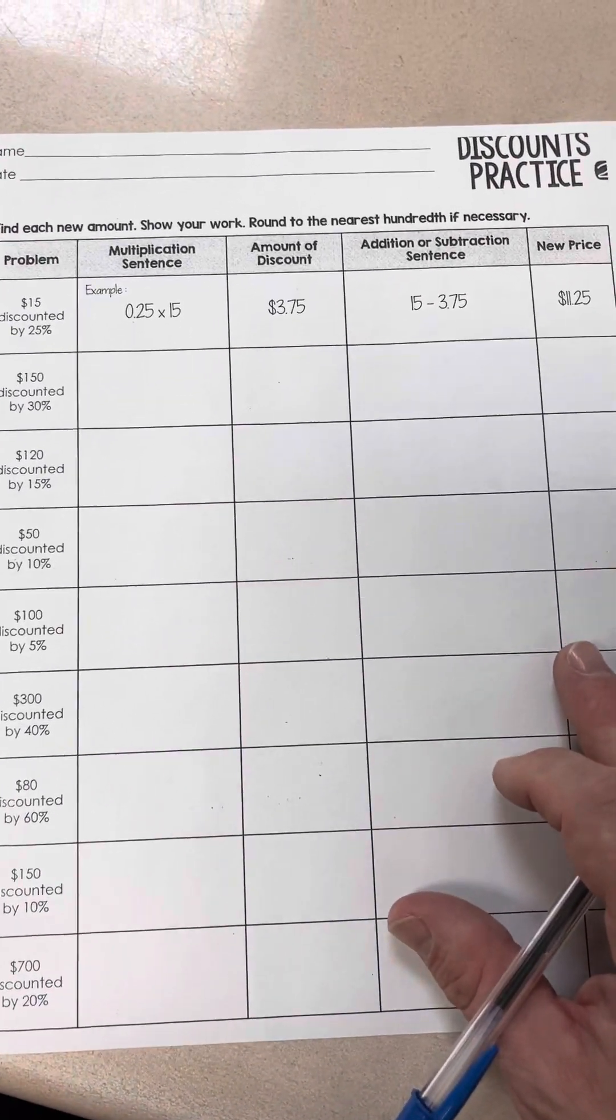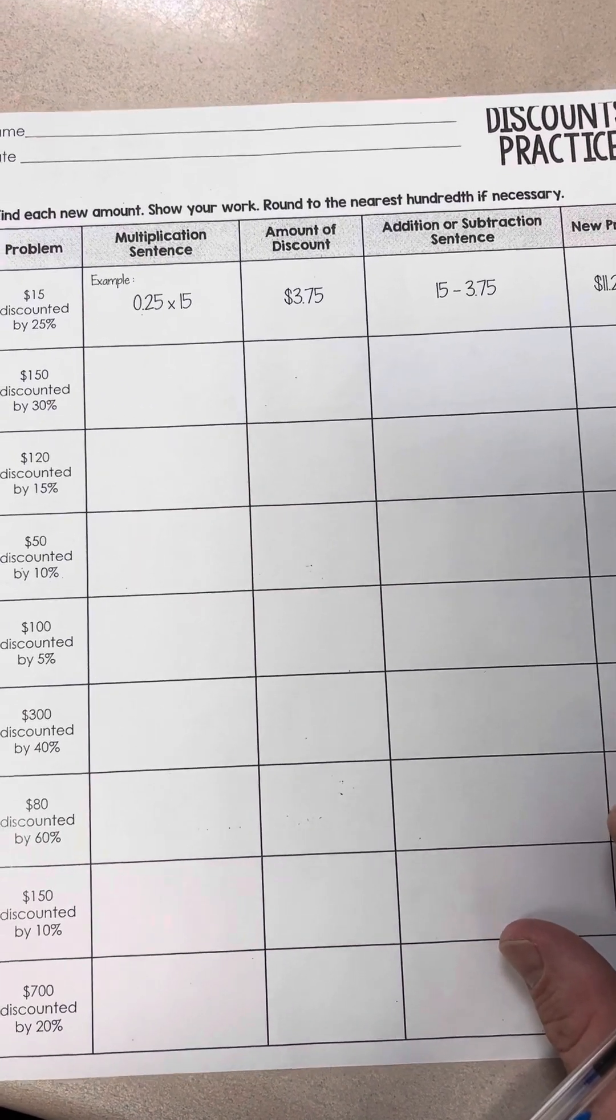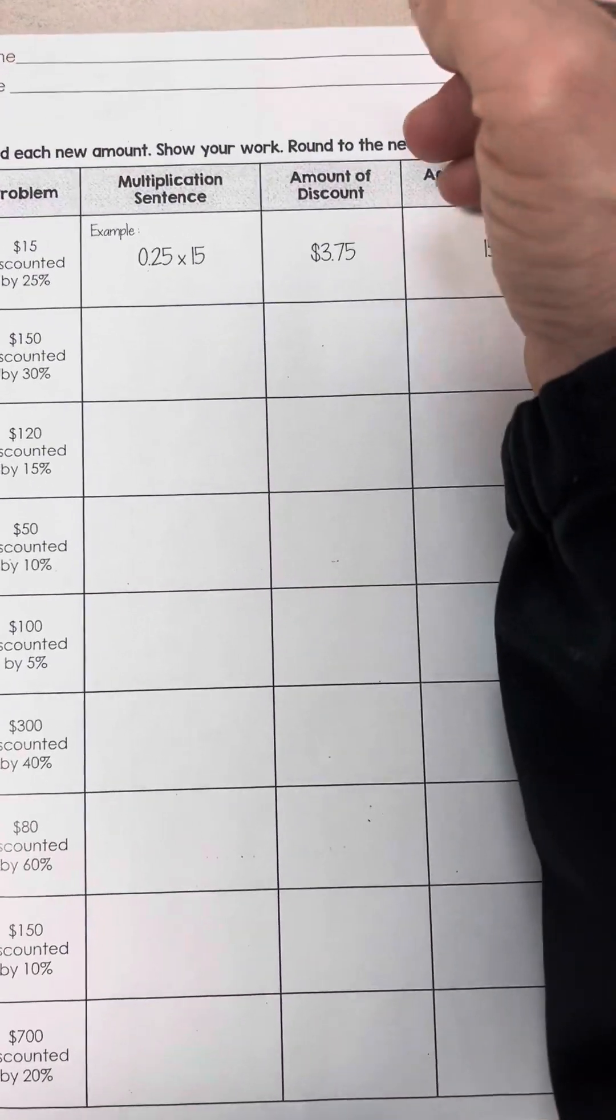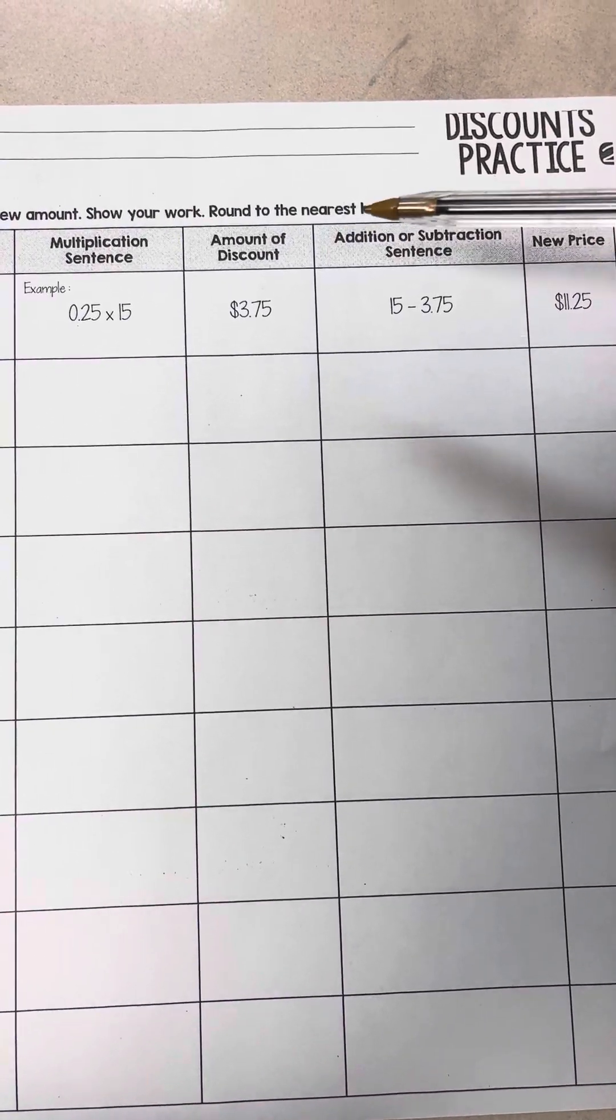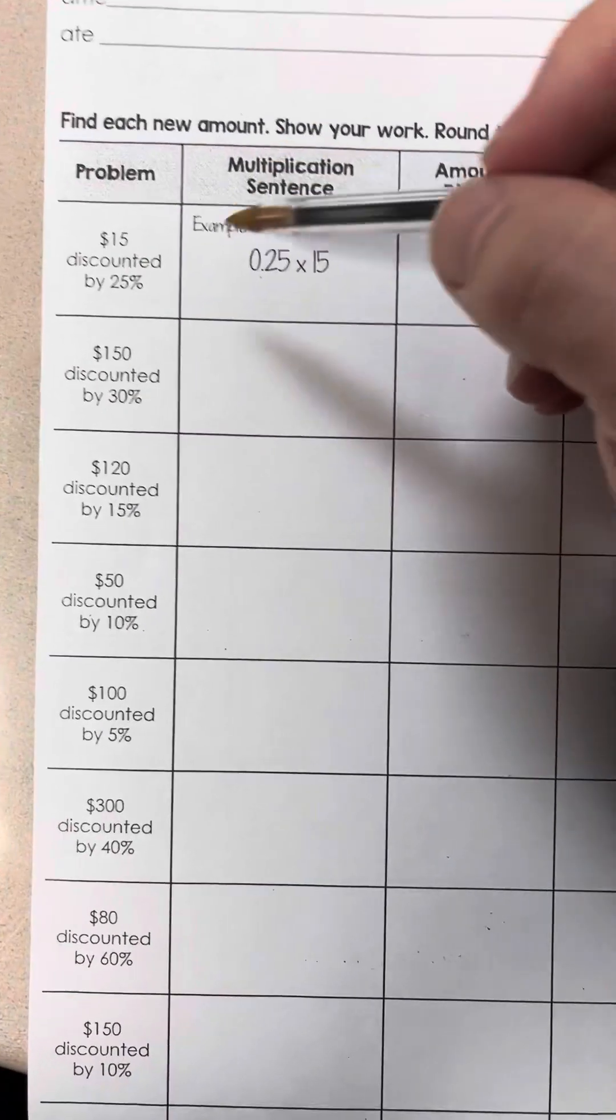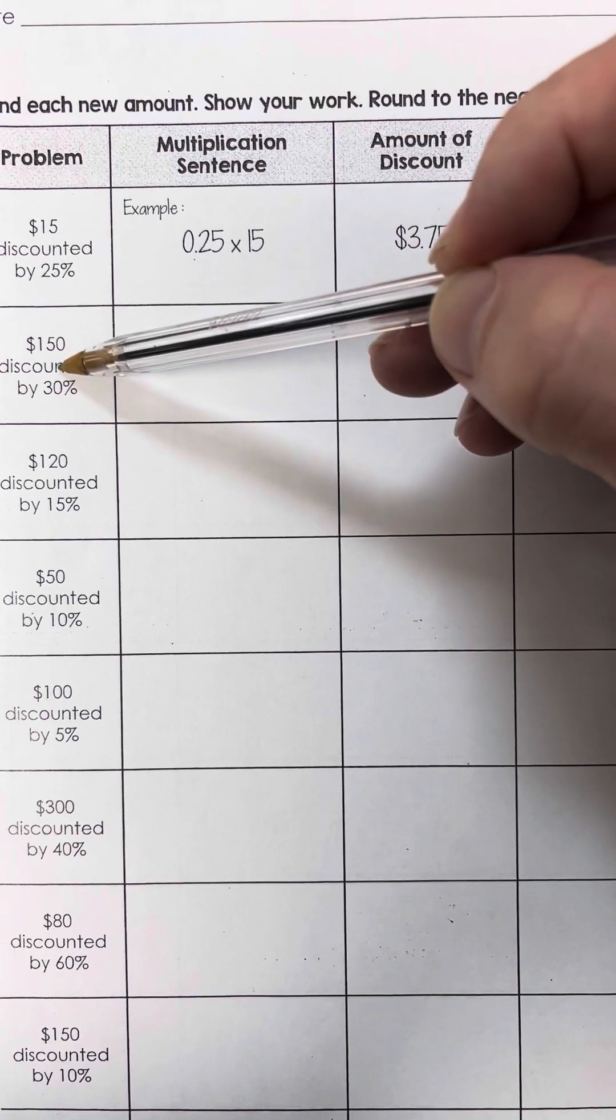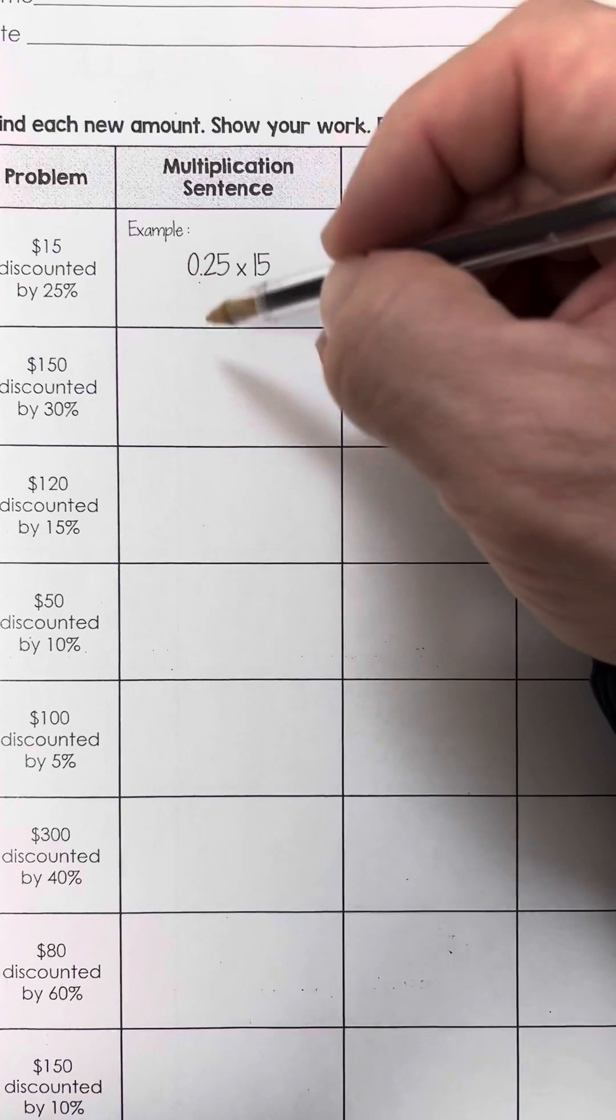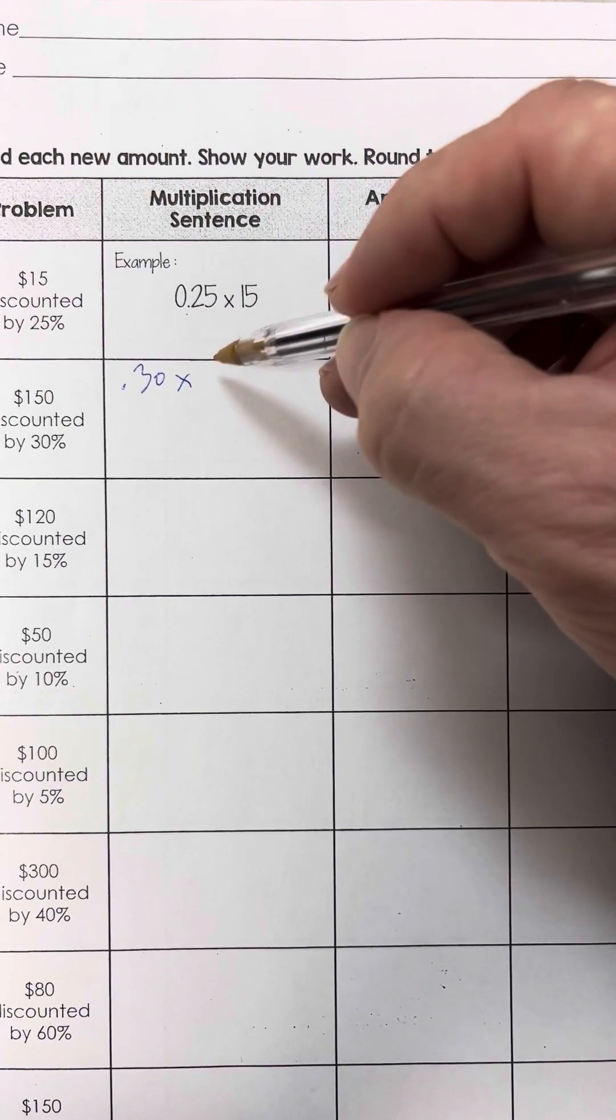Okay, so this is the second worksheet right here, and we did this the same day. So this was also done on Friday, and we're doing the same steps as the first one. We're just adding one more step. So the first thing we're going to do is figure out what is 30% of 150. Now, we always have to change our percent form into a decimal form. So that's going to be 0.30 times 150.